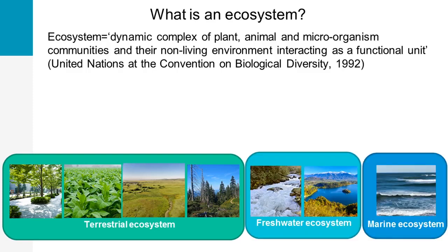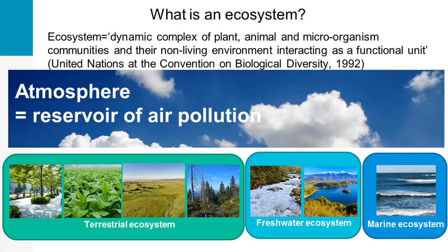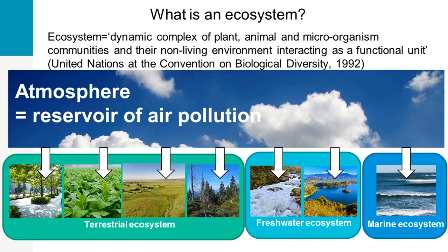All of these ecosystems are linked to the atmosphere and therefore atmospheric pollutants can affect all of them. In addition, some ecosystems can also emit pollutants to the atmosphere and act as natural sources. For instance, biological processes related to vegetation and soils can emit nitrogen compounds.